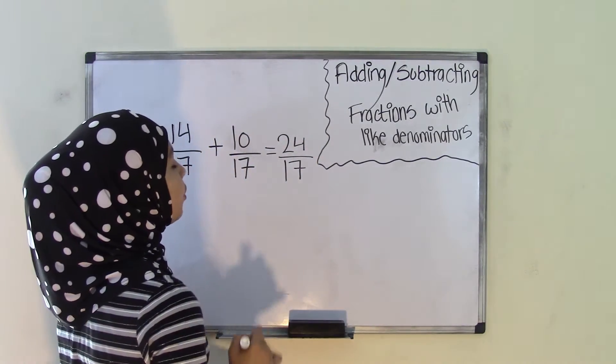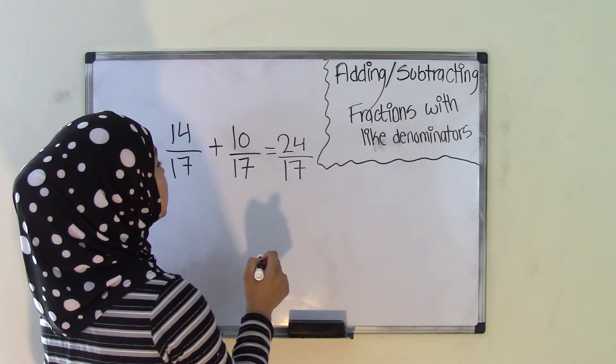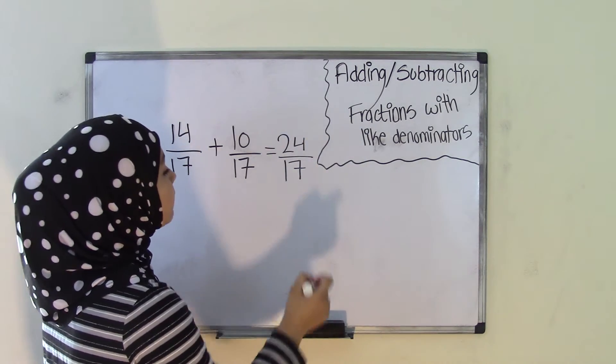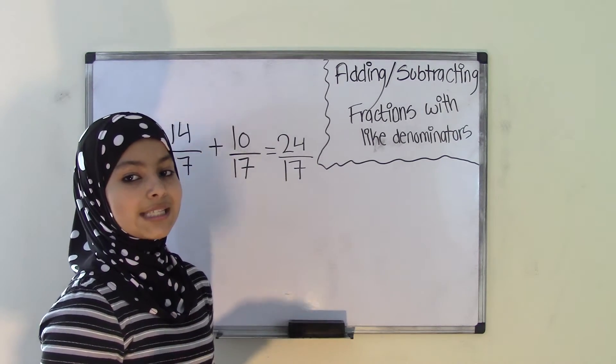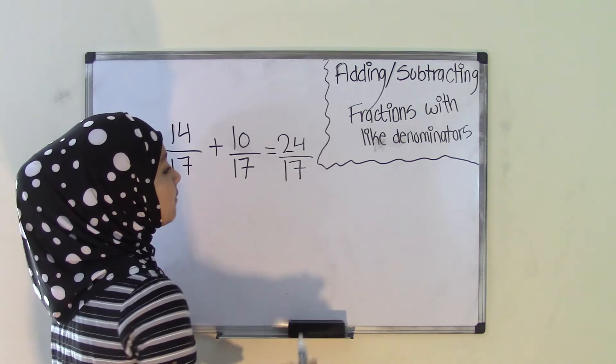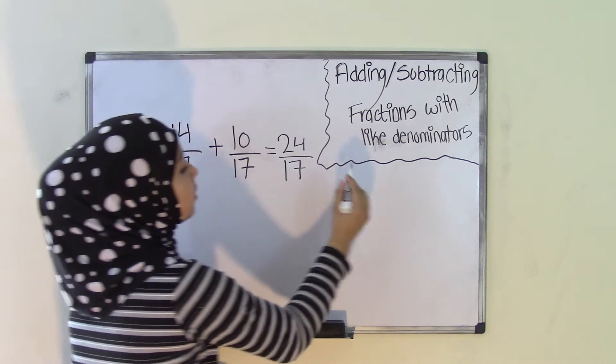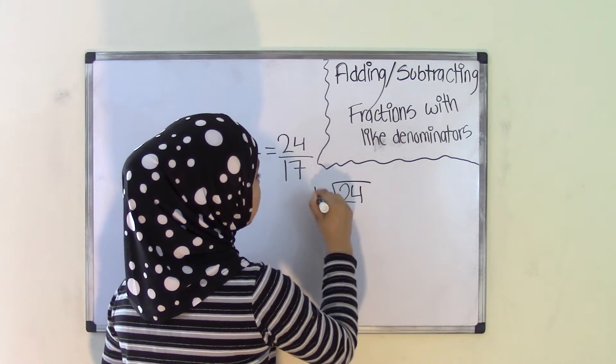And that means your sum for 14 over 17 plus 10 over 17 equals 24 over 17. But since this is an improper fraction, you need to convert this into a mixed number. You do that by dividing the numerator by the denominator. So 24 divided by 17.